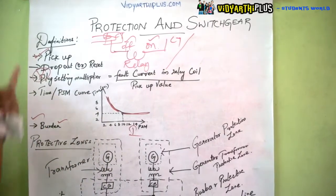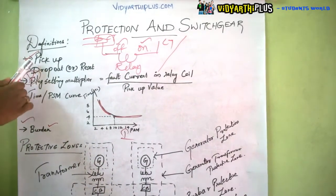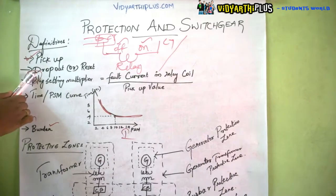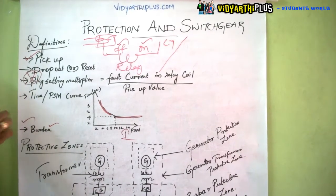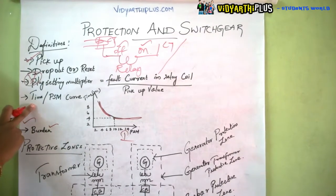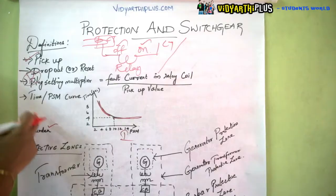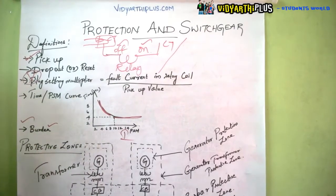To summarize the important definitions: first is pick up, then reset, then plug setting multiplier, then the time/PSM curve, and finally burden.